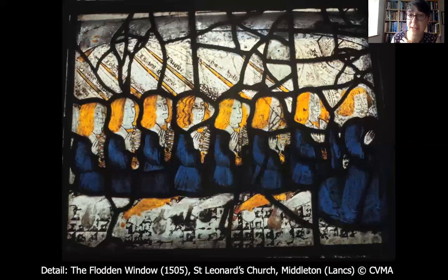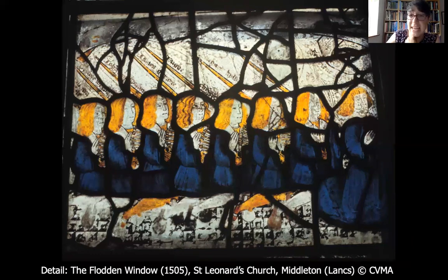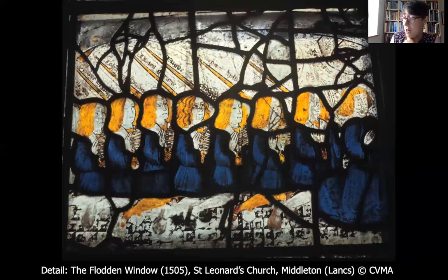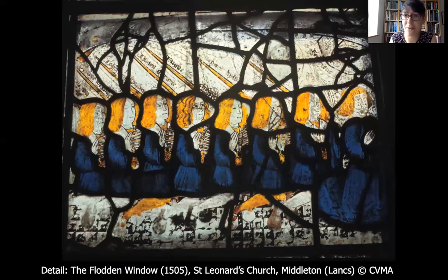Another quite unique example survives at Middleton in Lancashire, where we have seventeen kneeling named archers who all have their longbows. Just above the longbows you can make out some writing - each one is named individually. This is a guild of local archers who went into battle. It's thought the window was put up before they went to battle - the inscription asks people to pray for them - and they did indeed go to battle not long after at Flodden. It's fantastic to see historic costume and actual weapons depicted in a local parish window.